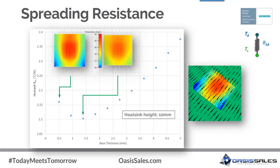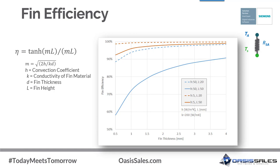Let's look at how spreading resistance affects heat sink thermal design. Consider a heat sink on a component in forced convection. Flotherm was used to vary the heat sink base thickness — which affects spreading resistance — while maintaining the overall heat sink height at 10 mm. As the base thickens, fins get shorter to maintain overall height. The sink-to-ambient thermal resistance is plotted versus base thickness. Adding one millimeter to the heat sink base thickness resulted in a much smaller temperature gradient and better thermal performance.